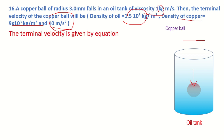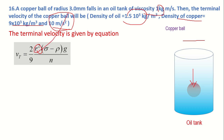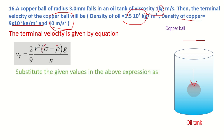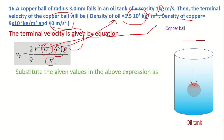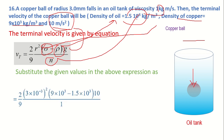The terminal velocity is given by the expression: Vt = (2/9) × r², where r is the radius of the ball, sigma is the density of the copper ball, rho is the density of the oil, g is 10, and this term is the viscosity of the oil. Substituting the values, we get (2/9) × (3 × 10⁻³).